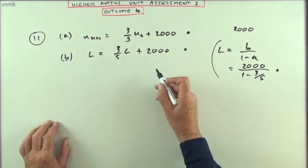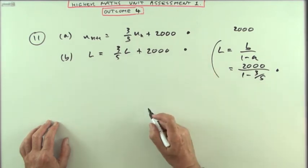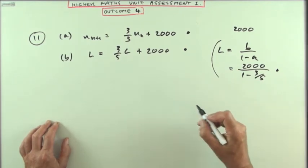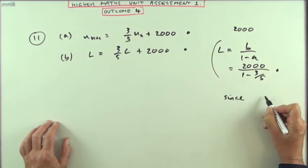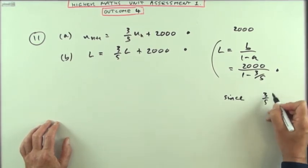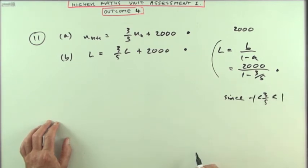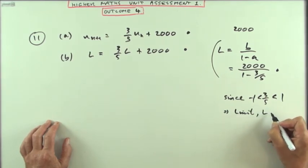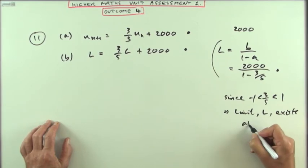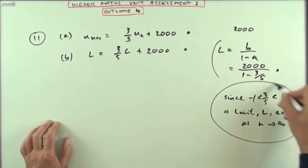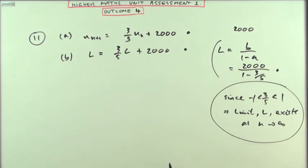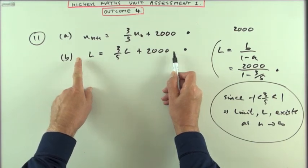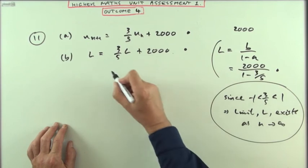Now, here, there's no specific mark for making the statement which you usually would in an exam, that a limit exists because this multiplying number happens to be a proper fraction. Normally, you'd be writing down, since the three-fifths is a proper fraction, either the modulus of this and one, or it lies between negative one and one. Since it's a proper fraction, that means a limit, which we're calling L, exists as N tends to infinity. Normally, in an exam, you'd have to put that down, but here, there's no specific mark for that in the marking scheme. It's simply putting down the limit formula, or limit condition, rather, or formula.